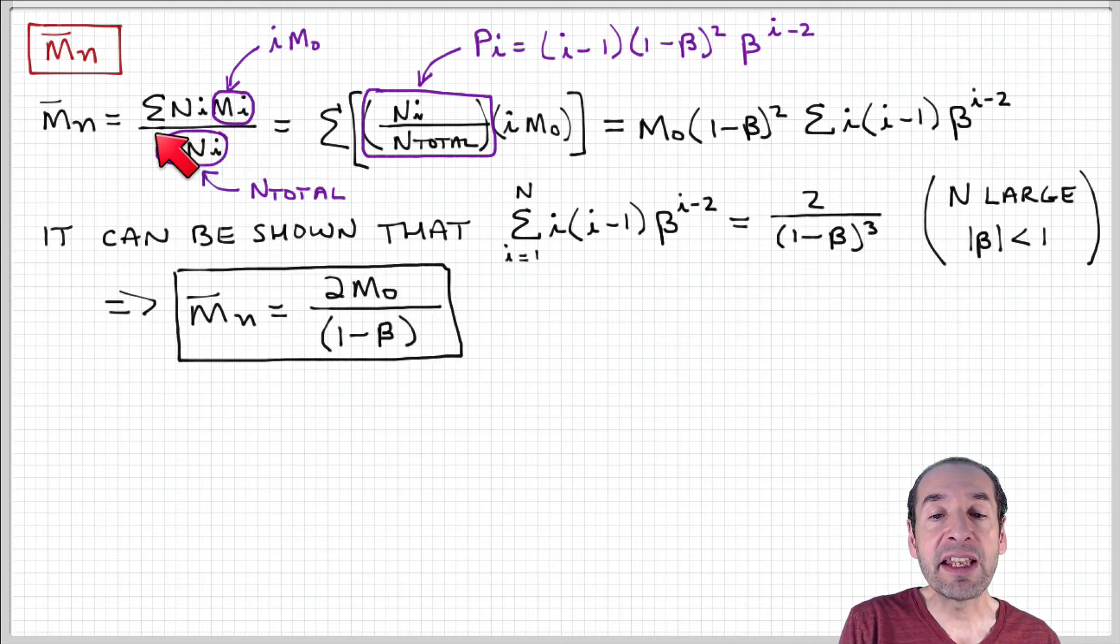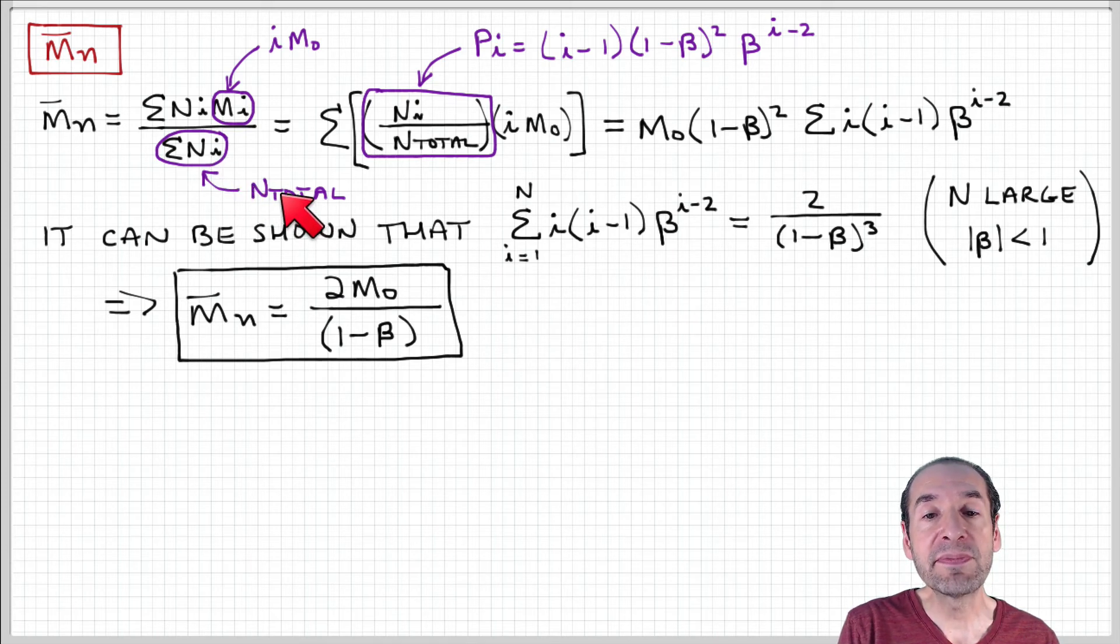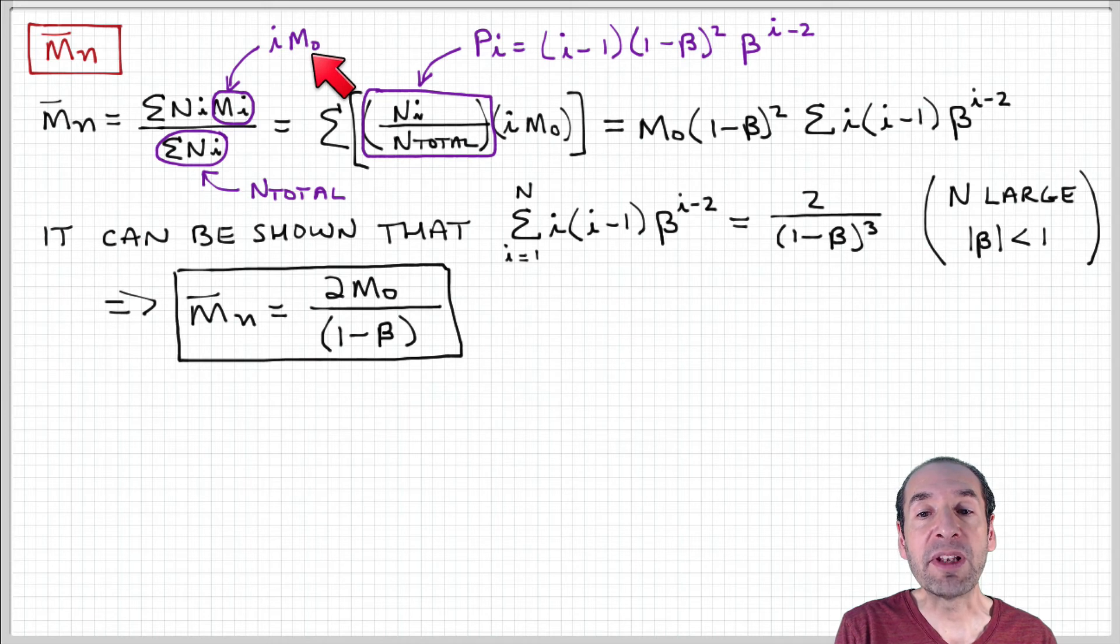This sum of the n-i in the denominator is the total number of chains. And this parameter m-i is i times the monomer molecular weight. In other words, the molecular weight of fraction i, a chain of length i, is the number of monomers times the monomer molecular weight.